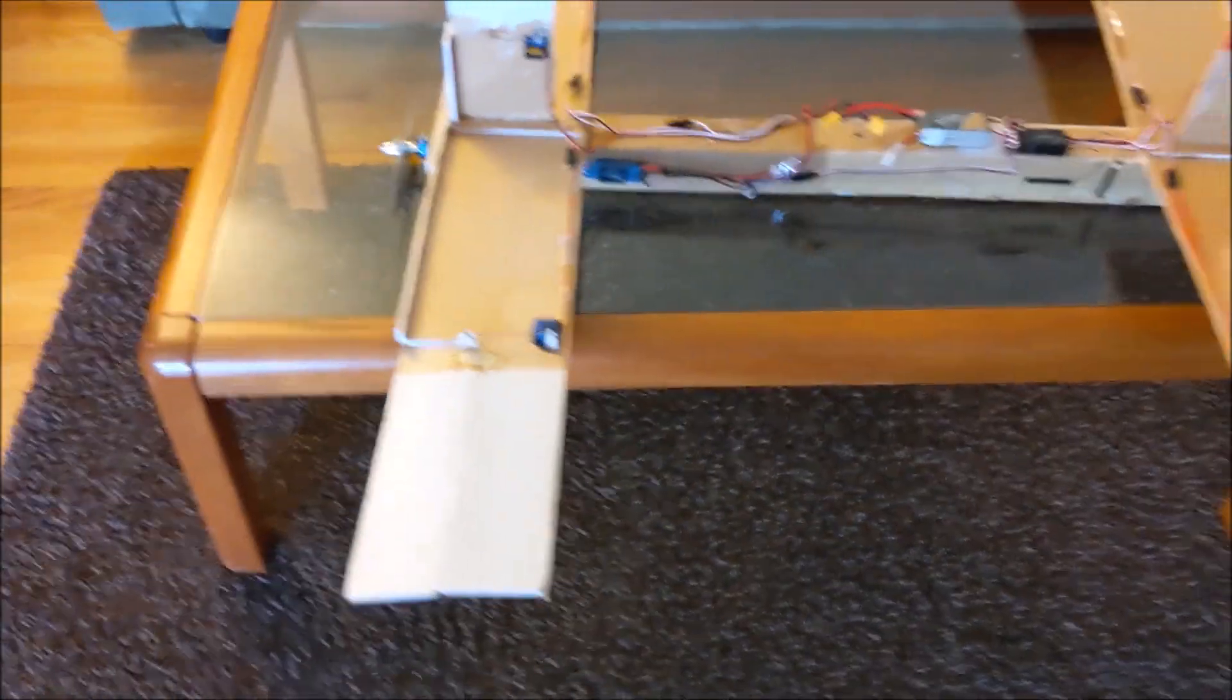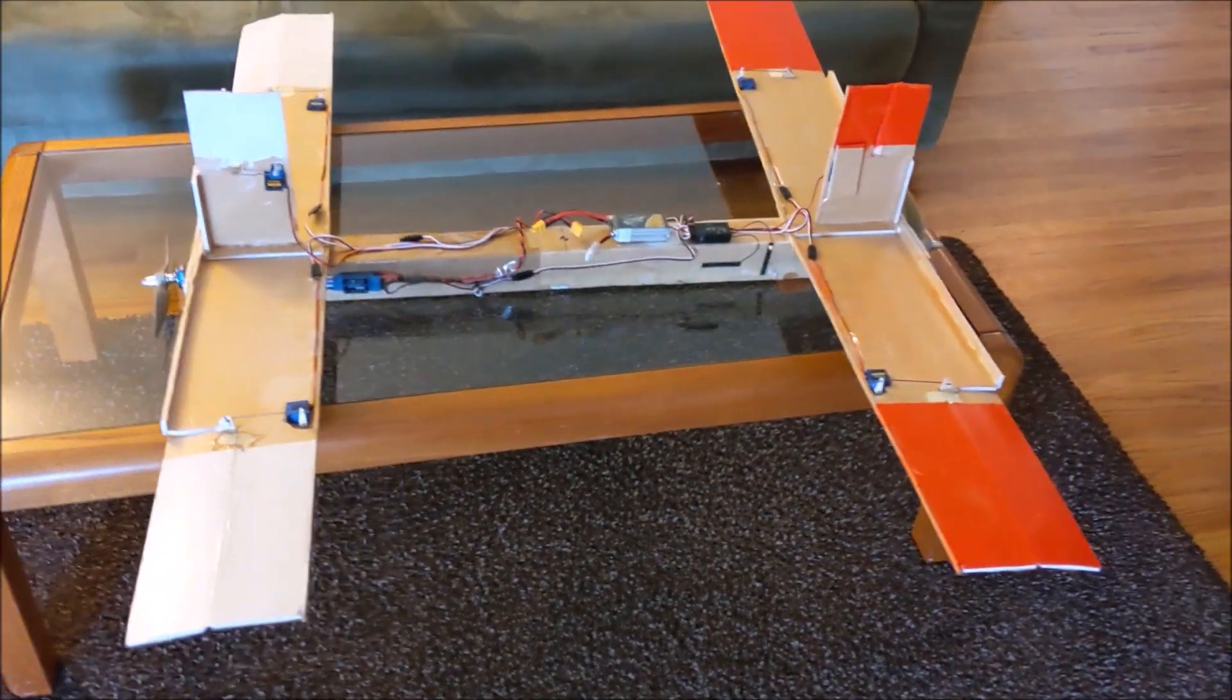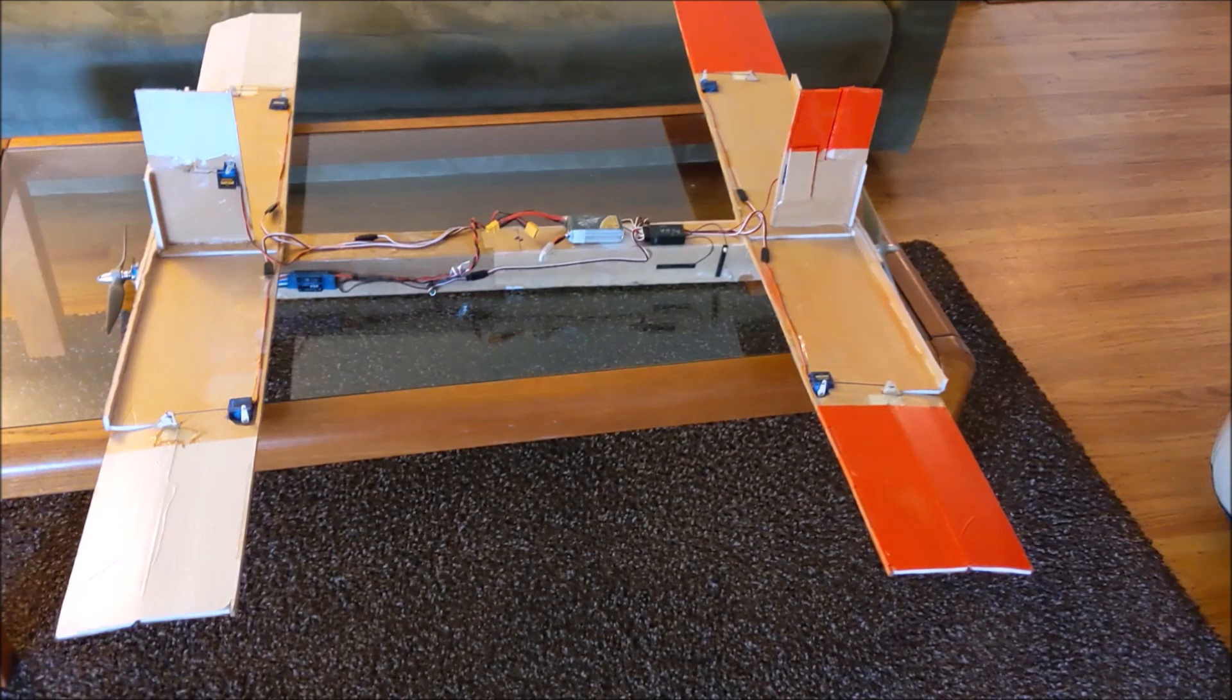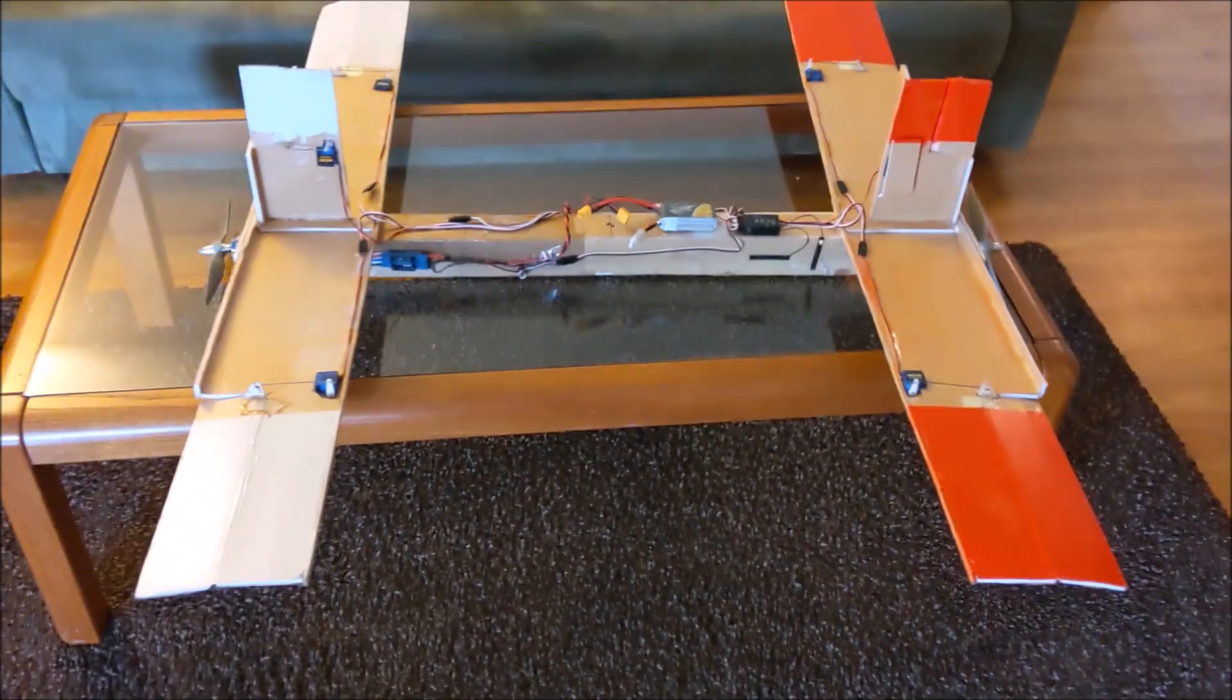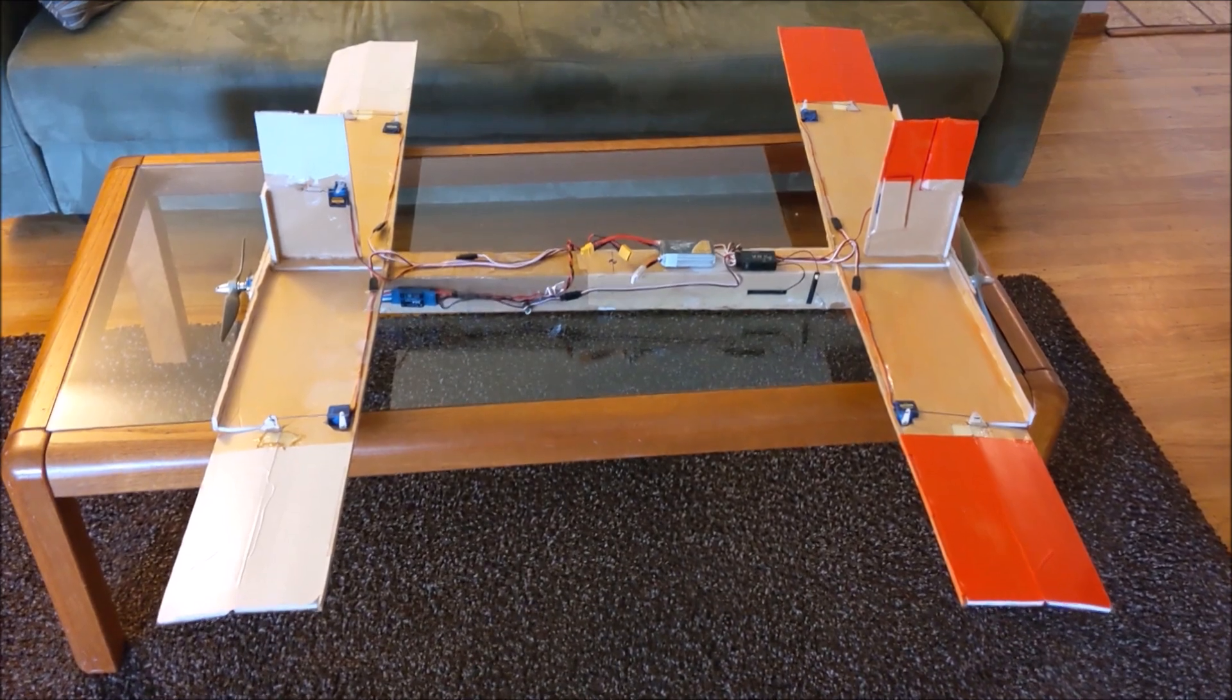And that change in the CL-alpha term allows it to become stable in either direction, both laterally and longitudinally. Now, I will show you the control surface motion because it's a bit unusual also.